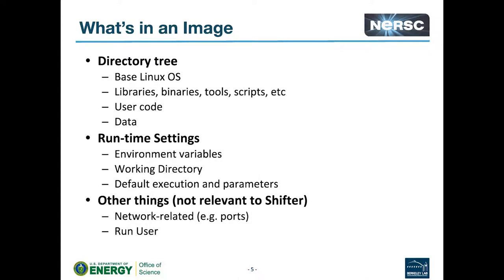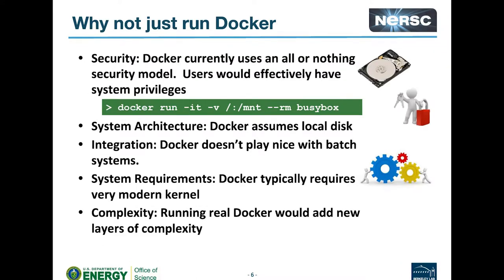There's a networking component of Docker — different Docker containers can talk to each other over a network. This talk is about Shifter, but it's related to Docker. What's the difference between Docker and Shifter? Why do we have this thing on Cori called Shifter instead of just running Docker?